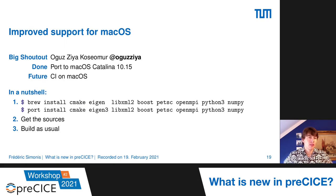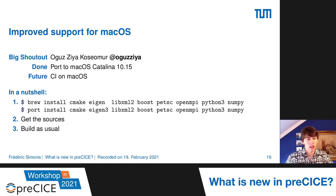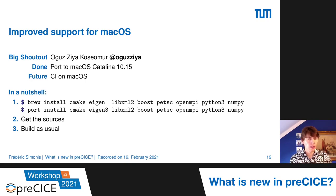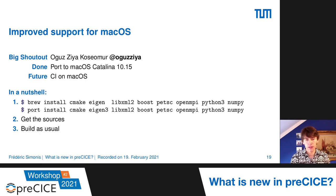Next is improved support for macOS. A big shout-out to Oos, who did this basically single-handedly. He ported preCICE to macOS Catalina 10.15 and is also working on CI for macOS — we have the hardware, we just need to implement the software. The bugs in preCICE on macOS are fixed and released. In a nutshell, you can use Homebrew or MacPorts to install the dependencies, get the sources as usual, build preCICE as usual, and it should all work out of the box now.